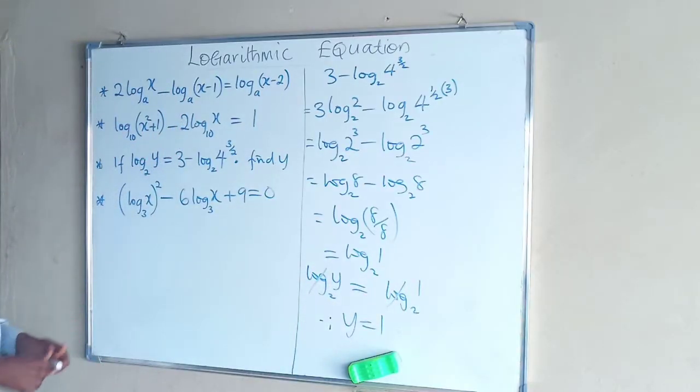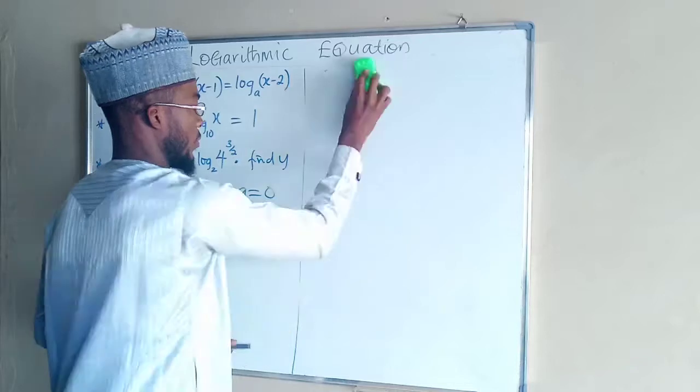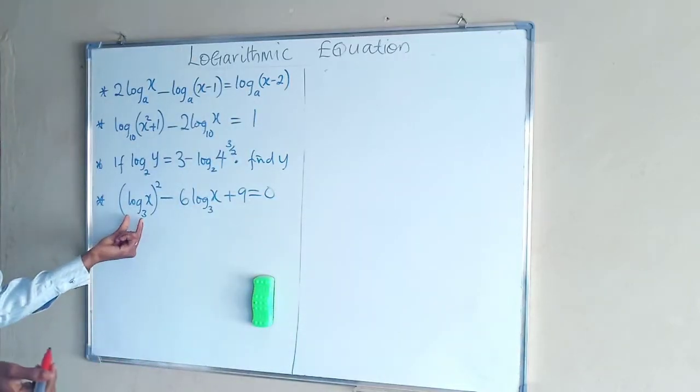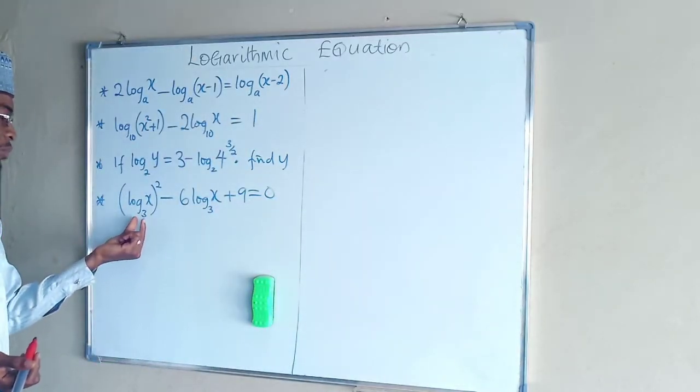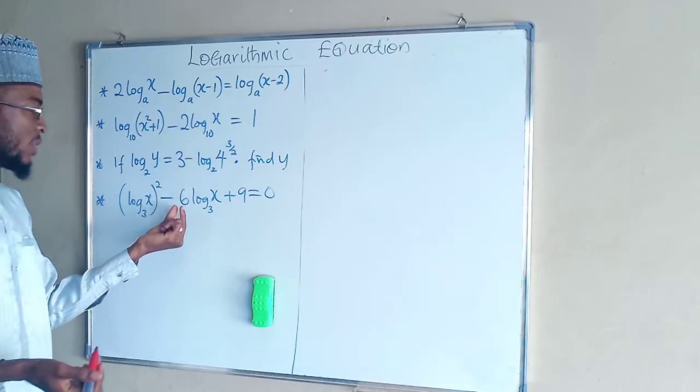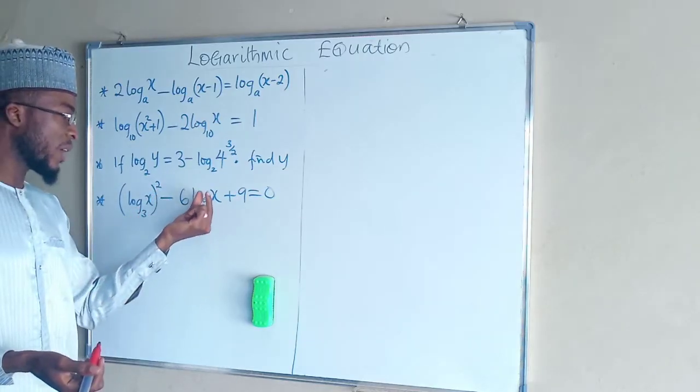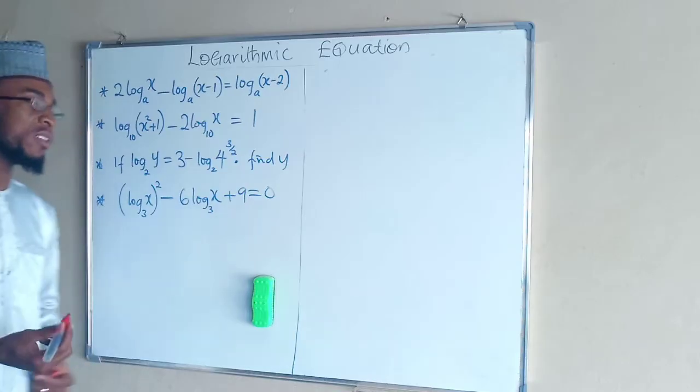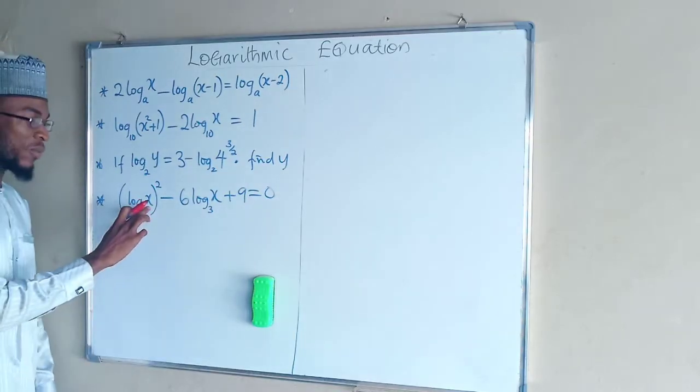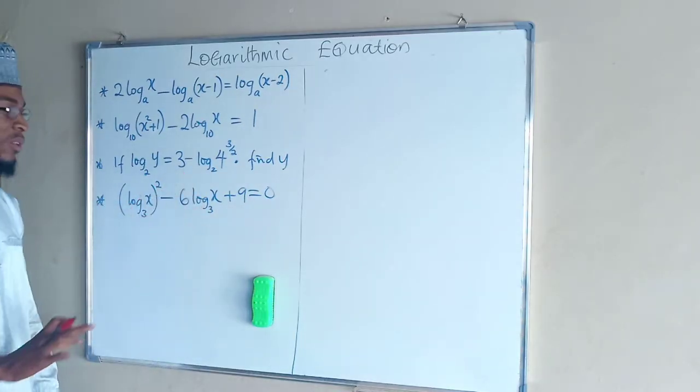Now then the last one. We have log x base 3 raised to the power of 2 minus 6 log x base 3 plus 9 equals 0. We need to find the value of x that will satisfy this equation.